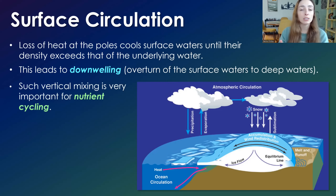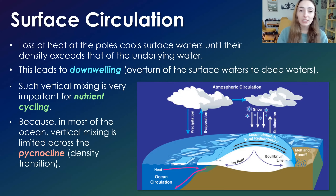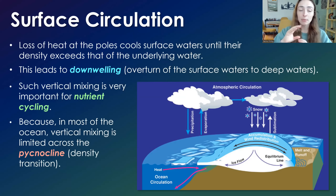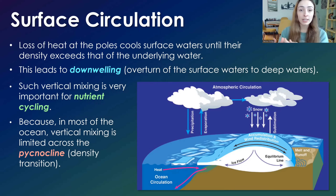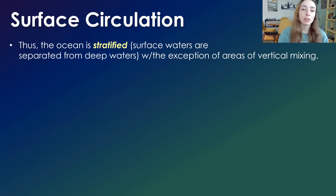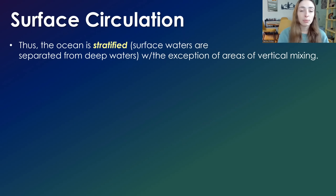This vertical mixing is really important for nutrient cycling. In most of the ocean, vertical mixing is limited across the pycnocline — the boundary at which density changes drastically from surface to deep waters. This density difference keeps vertical mixing from happening, so the surface and deep waters are very different in density and don't mix constituents very often. However, along coastlines where downwelling or vertical mixing occurs, nutrients can cycle back to the surface ocean from the deep ocean, fueling biological activity. Most of the ocean is therefore stratified — layered by density, chemistry, and temperature.